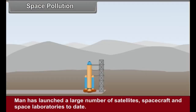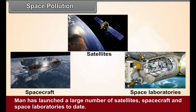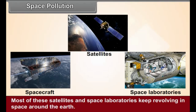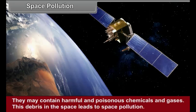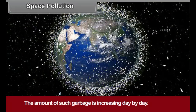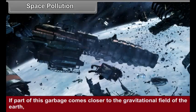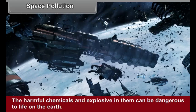Space Pollution: Man has launched a large number of satellites, spacecrafts and space laboratories to date. Most of these satellites and laboratories keep revolving in space around the Earth. They become a part of space debris once the mission is completed. They may contain harmful and poisonous chemicals and gases. This debris in space leads to space pollution. The amount of such garbage is increasing day by day. If a part of this garbage comes closer to the gravitational field of the Earth, there is a risk of these articles falling onto the surface of the Earth. The harmful chemicals and explosives in them can be dangerous to the life on the Earth.